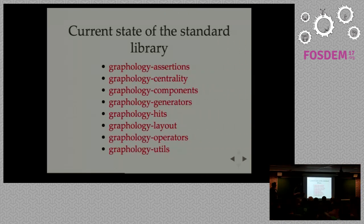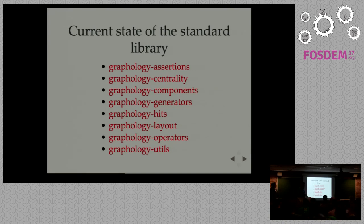This is the current state of the standard library — it will grow. You have assertion, centrality metrics, components, community detection, generators — like generating a random graph or an Erdős–Rényi graph — HITS, layouts like ForceAtlas2, operators, utilities, and so on.